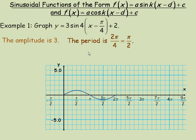The standard period is 2π. Since we have a 4 here, we divide that into the normal period to find the transformed period: 2π divided by 4 reduces to π/2. So the period of the function we're going to draw is much shorter — a quarter the size of the regular sine function.